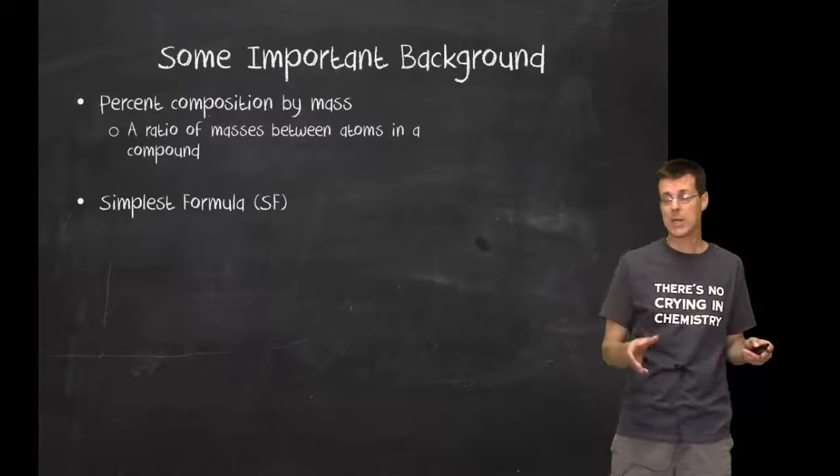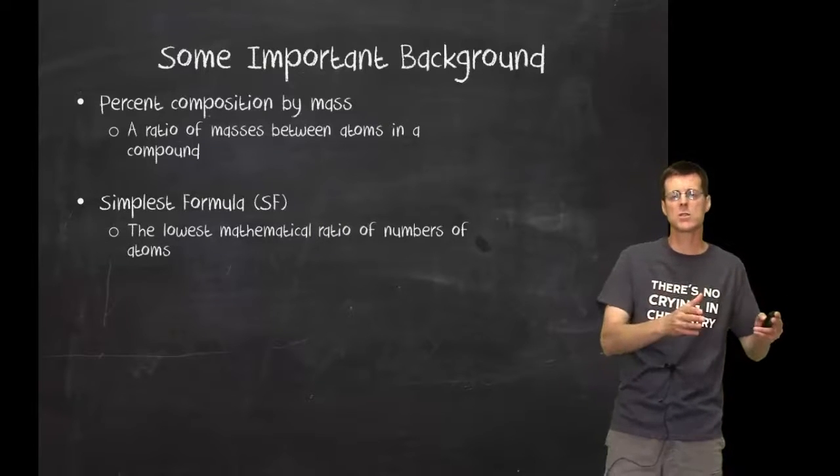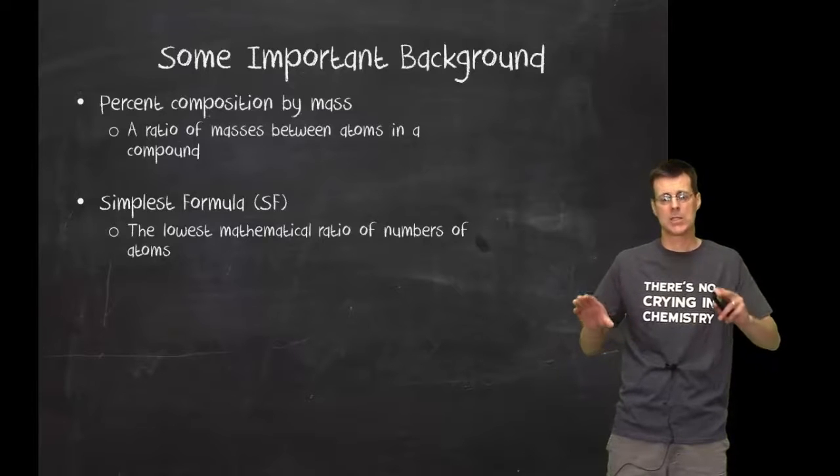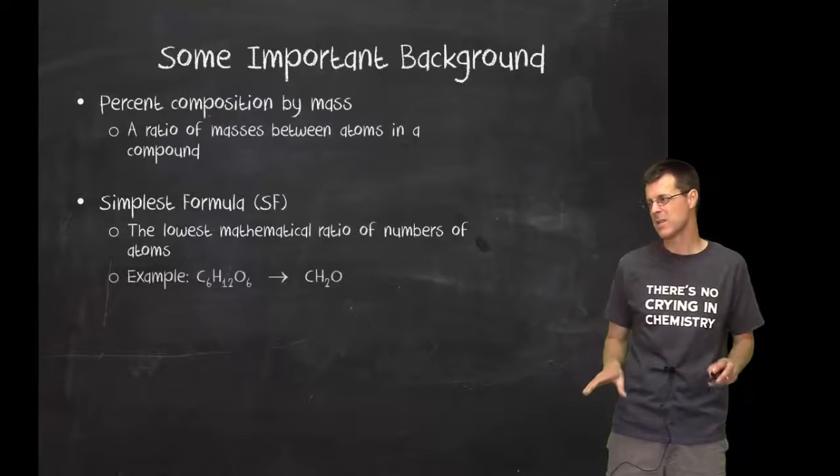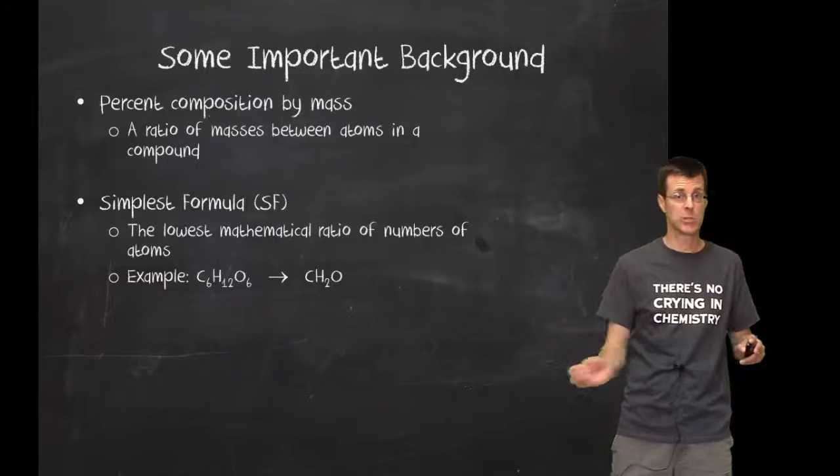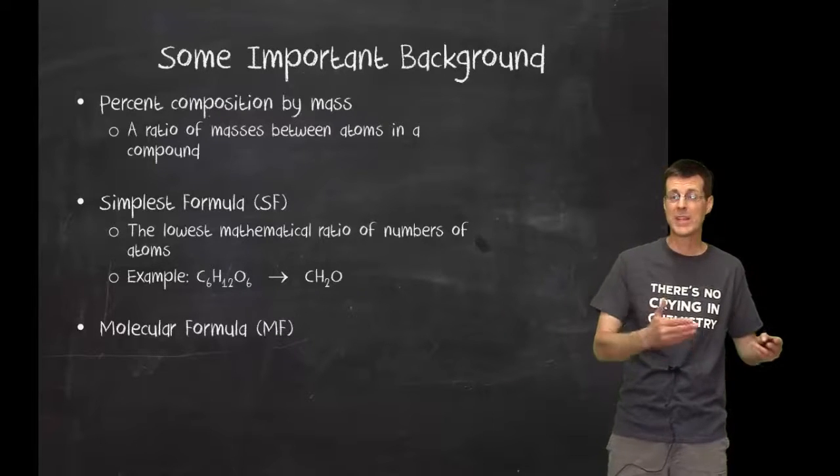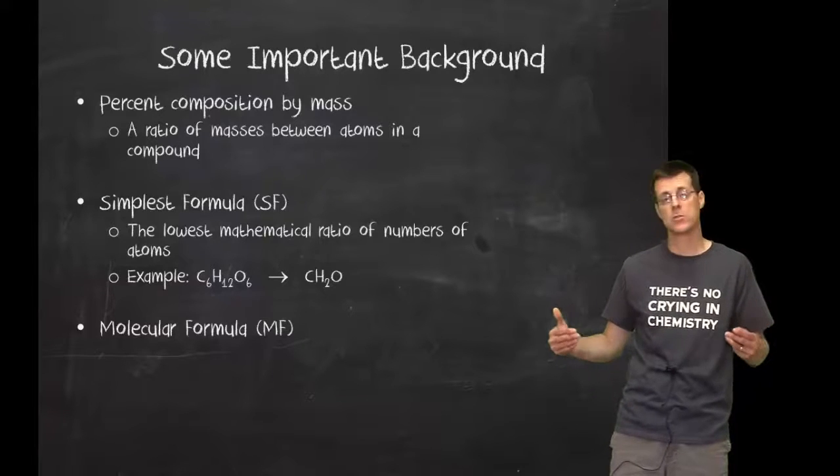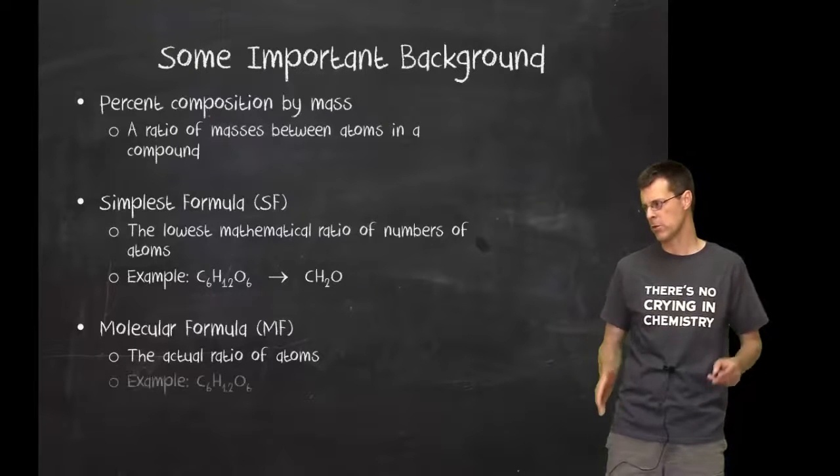Our first step today is going to be determining the simplest formula. The simplest formula is mostly just a mathematical relationship between the elements. It can mean nothing more than the mathematical relationship. It's not necessarily the actual chemical formula. It's more like the reduced ratio. Finally today, we'll come up with the molecular formula, and that is the actual chemical formula. For that, we'll need more information than what we need for just the simplest formula, but that will be the actual ratio of atoms.